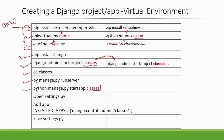You can name the app anything — app1, app2, whatever you want. After creating the application, Django needs to know it exists, since one project can have multiple applications. That is why in the `settings.py` file you must register the application in `INSTALLED_APPS`. If you do not register it, Django will not recognize your application. Add the app name, save the file, and you are done.